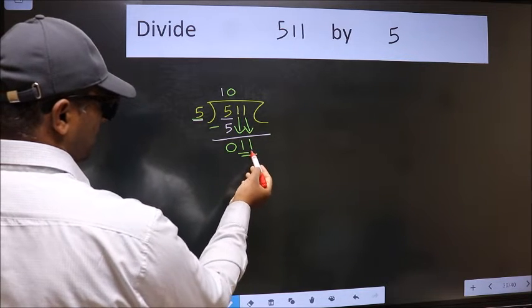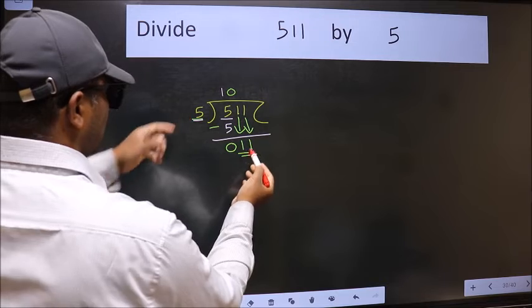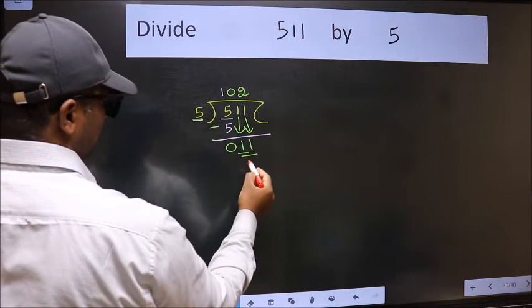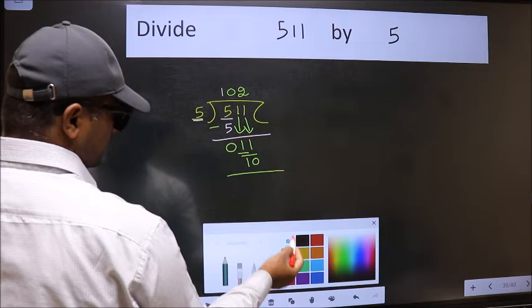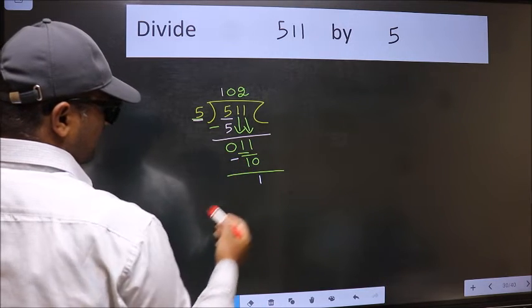Now we have 11. A number close to 11 in the 5 table is 5 times 2 equals 10. Now we should subtract. We get 1.